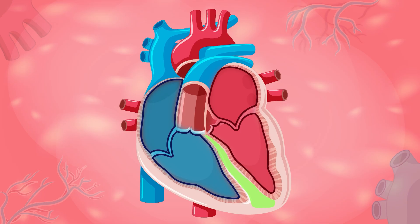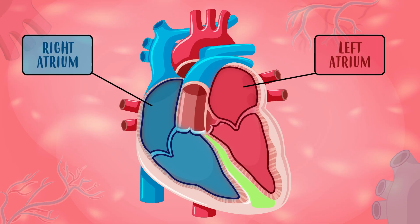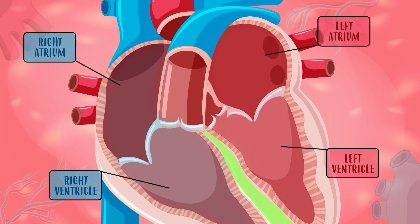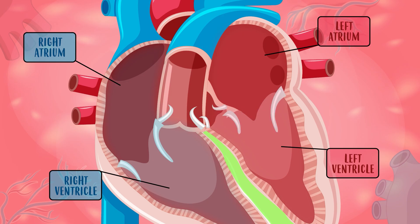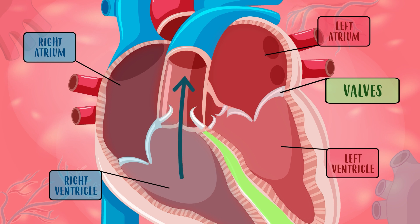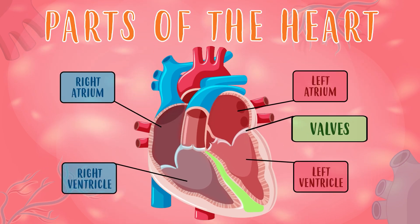Each one of these parts has two chambers or cavities. The upper cavities are called the right and left atrium, and the lower cavities are called the right and left ventricle. The heart also has four kinds of doors called valves. These valves open to let blood in and close so the blood can't go back.